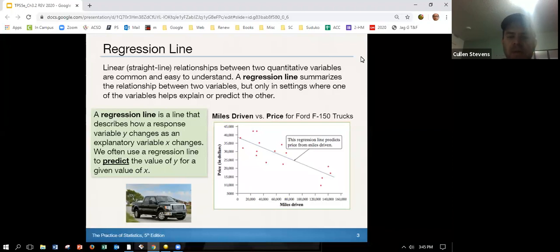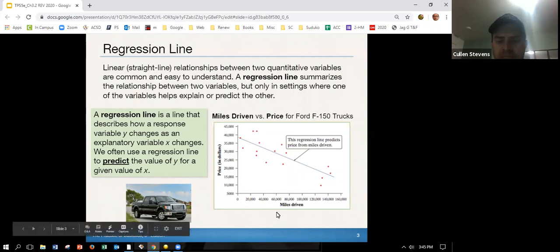So if we take a look here, we see this regression line. A regression line is a line that describes how the response variable y changes as the explanatory variable x changes. We often use a regression line to predict the value of y. So again, this is really the big idea, what we want here. We're looking for a prediction. We have some points, we build a line through that model, and we use that to predict. So you can see a very natural relationship is we have a vehicle here. This is the miles driven versus the price for Ford F-150 trucks, and you can see as x increases, as the miles go up, the price decreases. This has a negative slope here, or this is a negative association here, negative relationship.